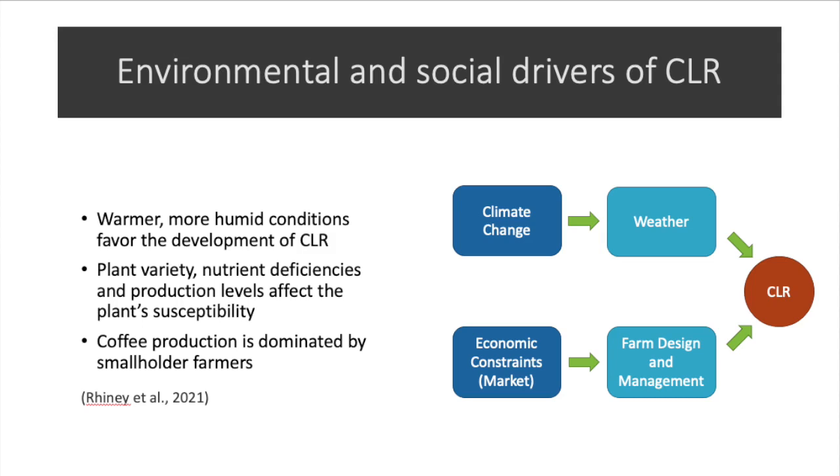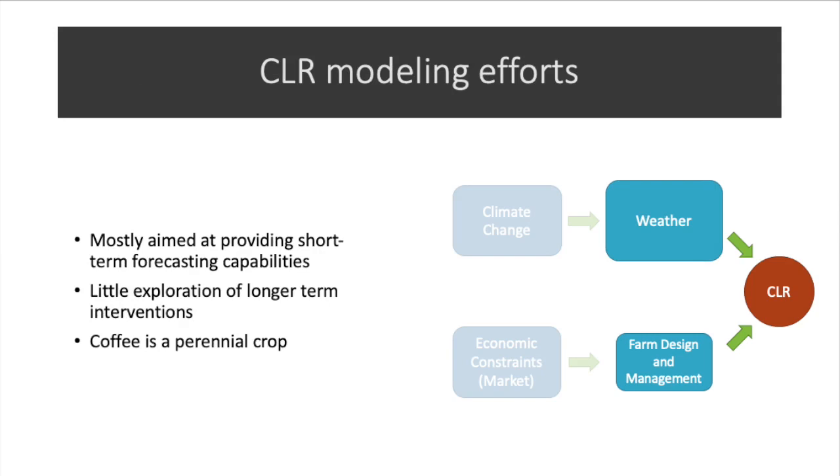On the other hand, factors of farm design and management affect the plant's variety, its nutrient deficiencies, and its production levels, which in turn affects its susceptibility to the disease. It is important to note that coffee production is dominated by smallholder farmers, which introduces some special economic constraints that affect the decisions on farm management.